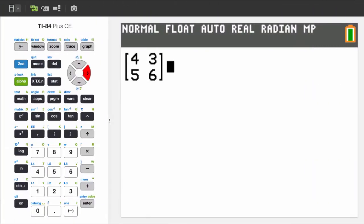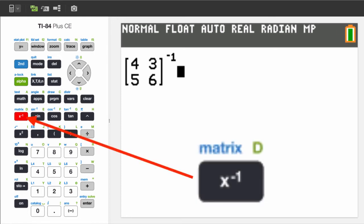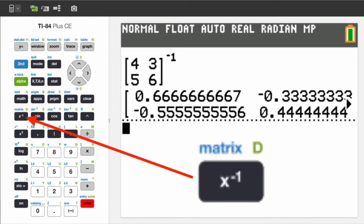Sometimes you need to find the inverse of the matrix. The best way to do that is by using the inverse key marked with x to the power of negative 1.